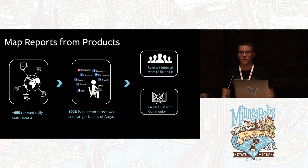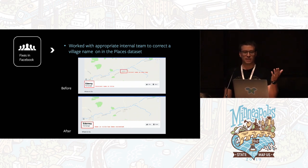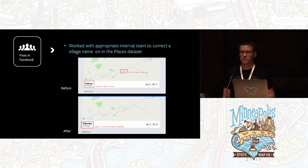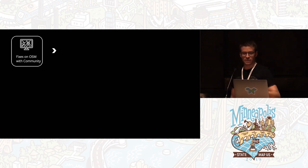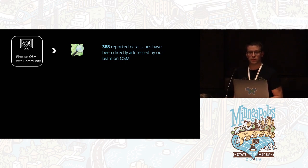These reports get put into two different buckets. If they turn out to be actually Facebook data, we do a fix on Facebook — OSM was correct, but our places data had a city name misspelled. A user let us know and we got it fixed. More typically, though, we find an issue with OpenStreetMap, and when that happens, our team goes in and fixes it. Directly from reports, we've fixed 388 issues currently.